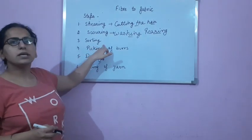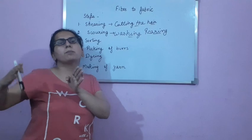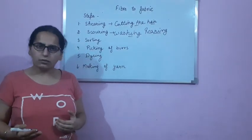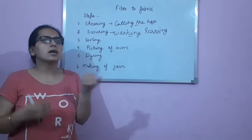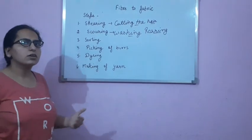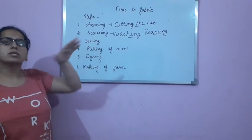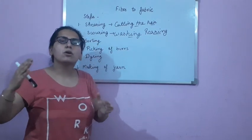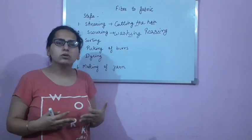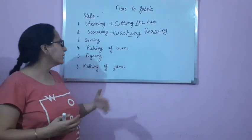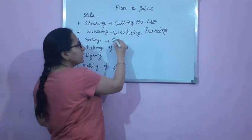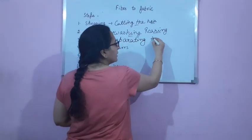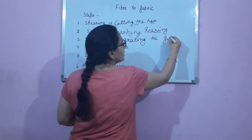Next step is sorting. Sorting means to separate. As you know, in the market different varieties of wool are available — they are of different prices and different textures. So in the third step, we separate the different textures and types of fibers on the basis of their size and quality. Sorting means separating the fibers on the basis of their quality and texture.